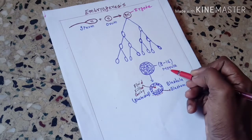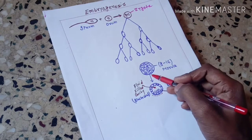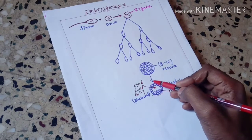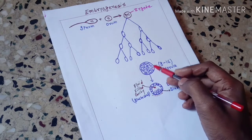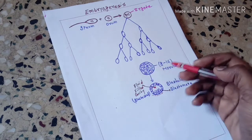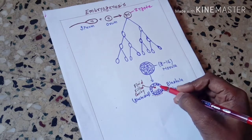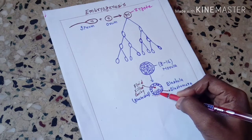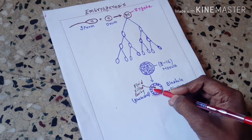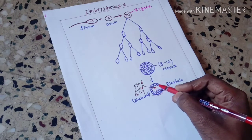Now this morula starts arranging itself. The cells within the morula begin to arrange themselves in a specific manner — you can clearly see here how they arrange themselves.